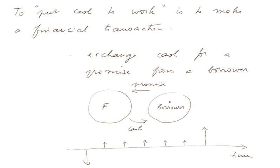The borrower receives our cash and promises to pay us in the future various payments until the contract is finished. Initially we shell out cash, and then we receive yearly some interest charges, and at the end of a certain period we receive our initial value of cash and the last payment. This is the standard representation of what's called a bond.